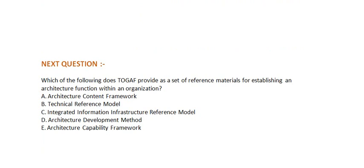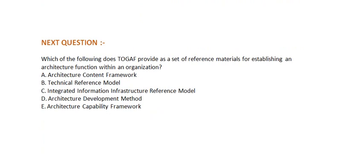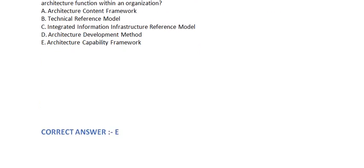Next question: Which of the following does TOGAF provide as a set of reference materials for establishing an architecture function within an organization? Option A: Architecture Content Framework. Option B: Technical Reference Model. Option C: Integrated Information Infrastructure Reference Model. Option D: Architecture Development Method. Option E: Architecture Capability Framework. The correct answer is Option E.